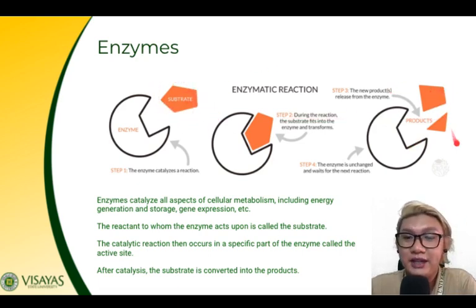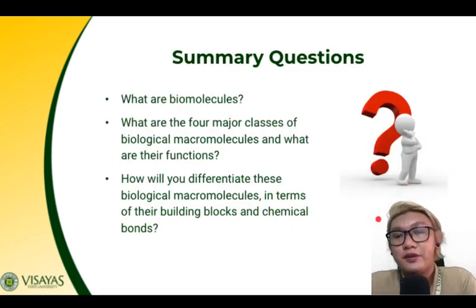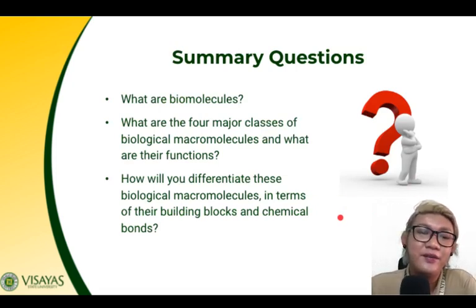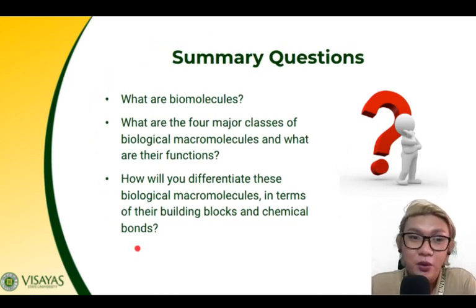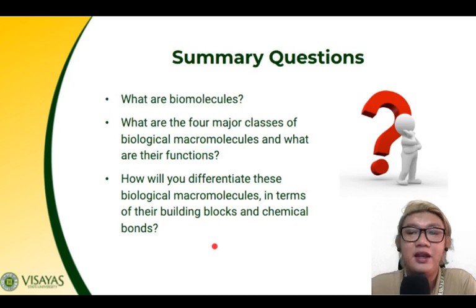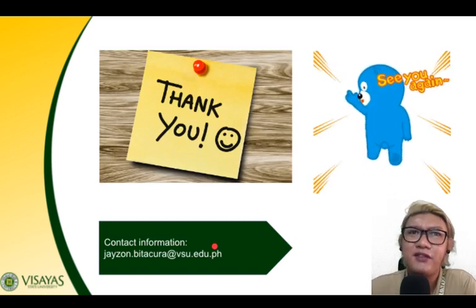After catalysis, the substrate is converted into new products — for example, maltose is converted into two glucose molecules. To summarize this lesson, you should be able to answer: What are biomolecules? What are the four major classes of biological macromolecules and their functions? How do you differentiate these macromolecules in terms of their building blocks and chemical bonds?